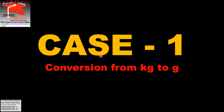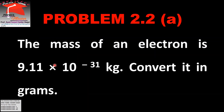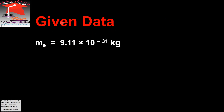Problem 2.2 has been divided into 3 cases — we will convert 3 units. Case 1: Conversion from kilogram to gram. The mass of an electron is 9.11 into 10 to the power minus 31 kg, to be converted into grams. Given data: mass of electron is equal to 9.11 into 10 to the power minus 31 kg.